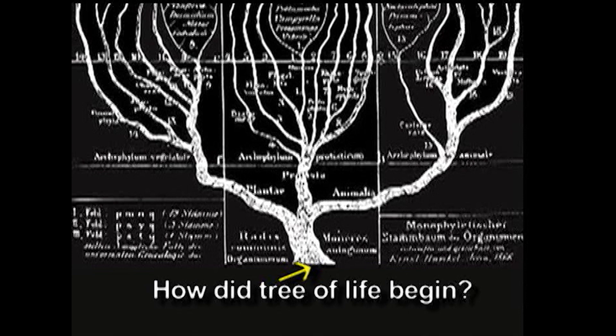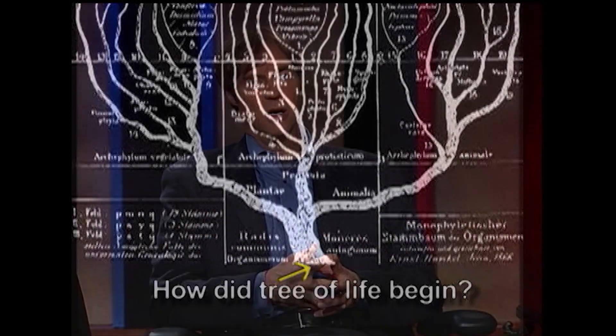Darwin didn't address the origin of the trunk, where we got the first life at the very beginning. And oddly, though there have been attempts to explain that since his time, 150 years on, we don't have any undirected evolutionary theory of the origin of life that is satisfying the scientific community.